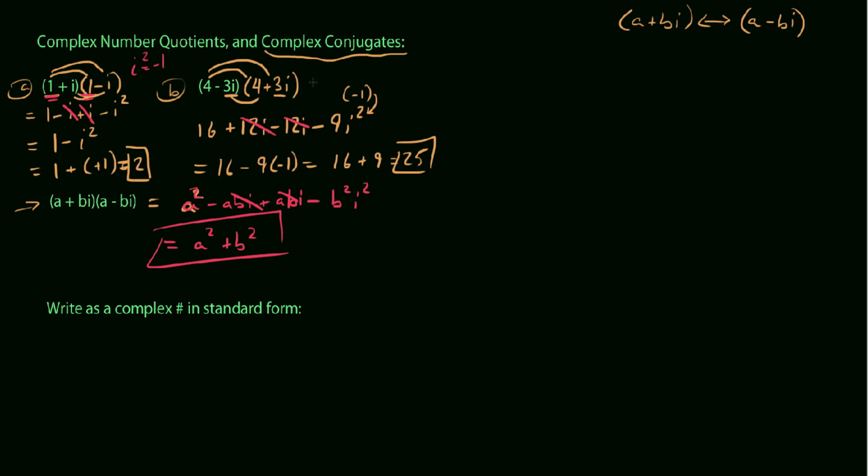It is always the case that when you multiply a complex number by its conjugate, you always get the a squared plus b squared. So for example, if you peek back up here, a was 4 in both instances. And b, whether you interpret it as negative 3 or positive 3, it's 3. And so what we ended up with when we multiplied by conjugates was 4 squared plus 3 squared, which was 25.